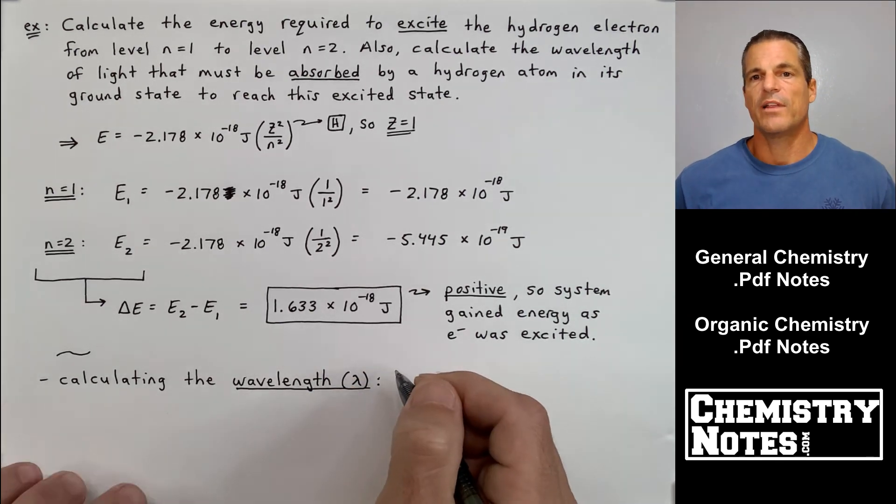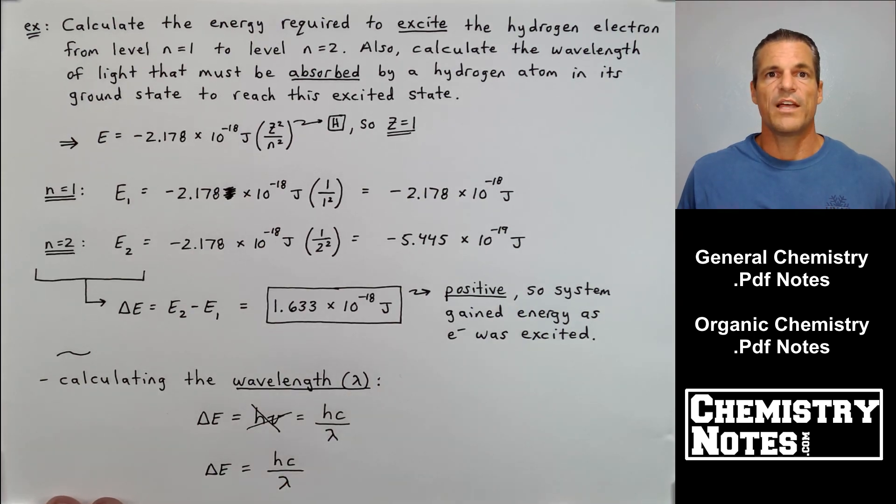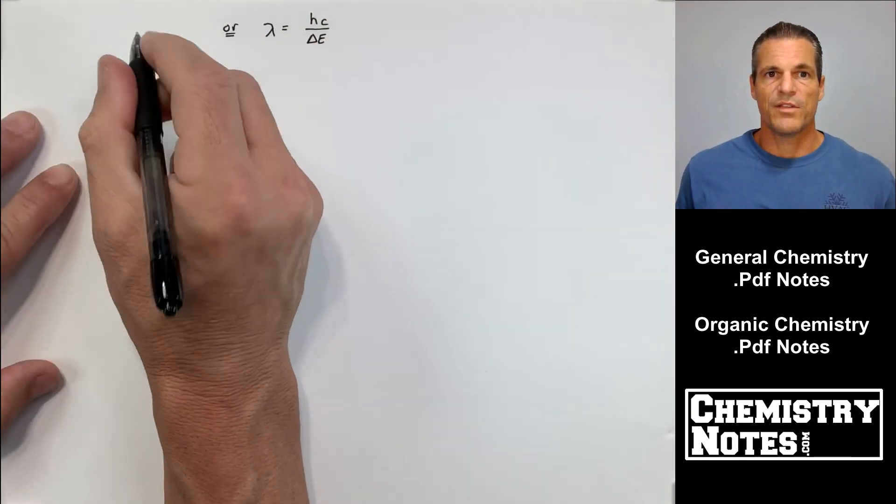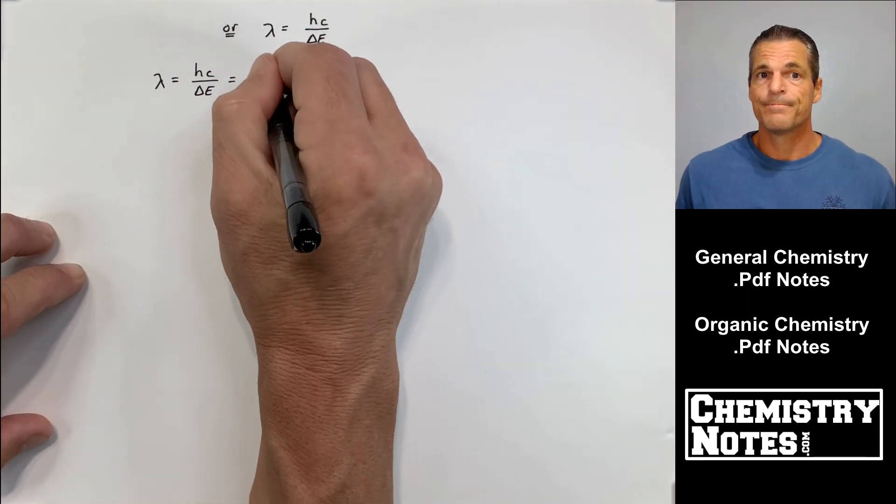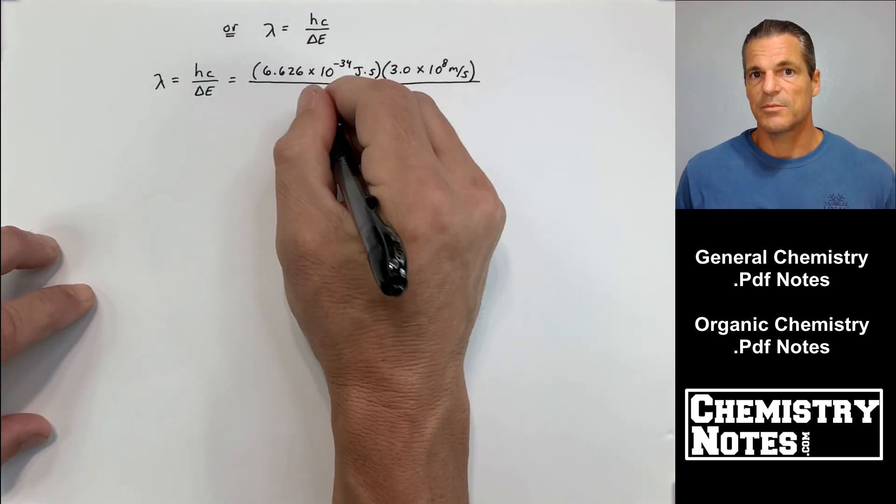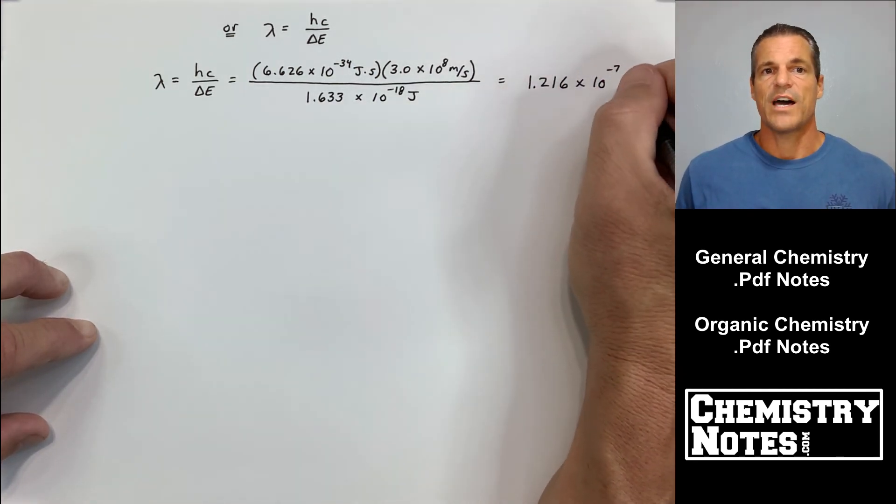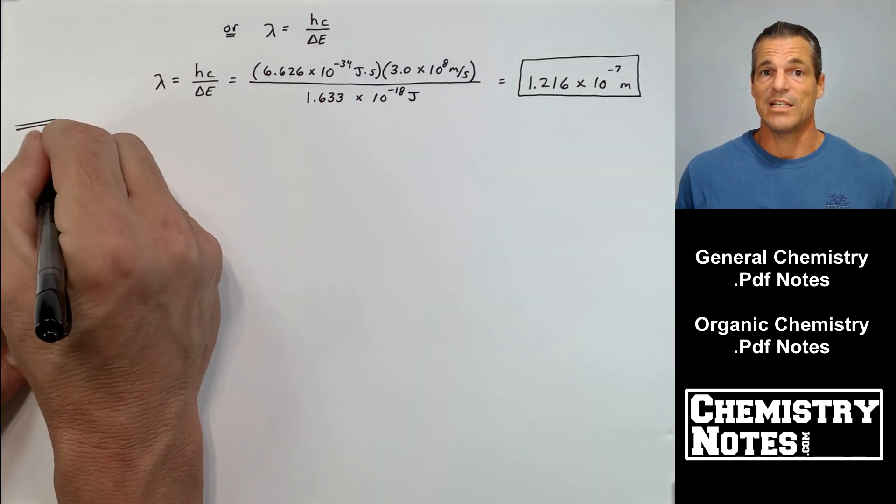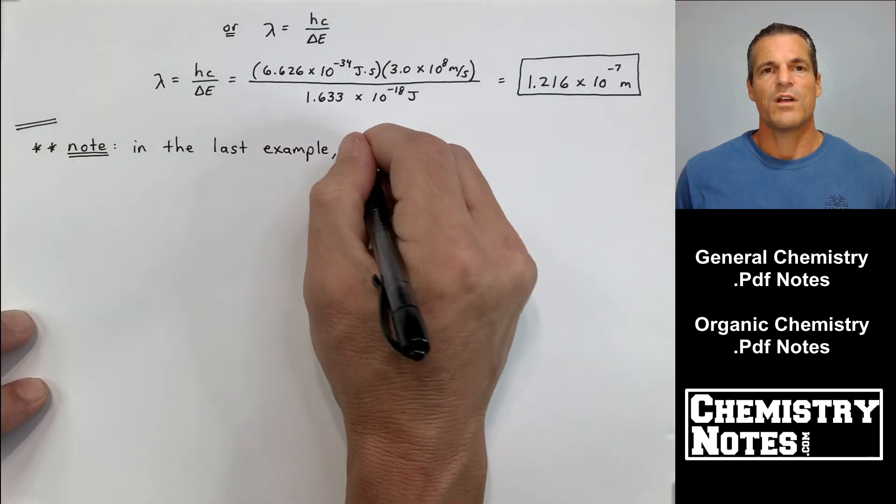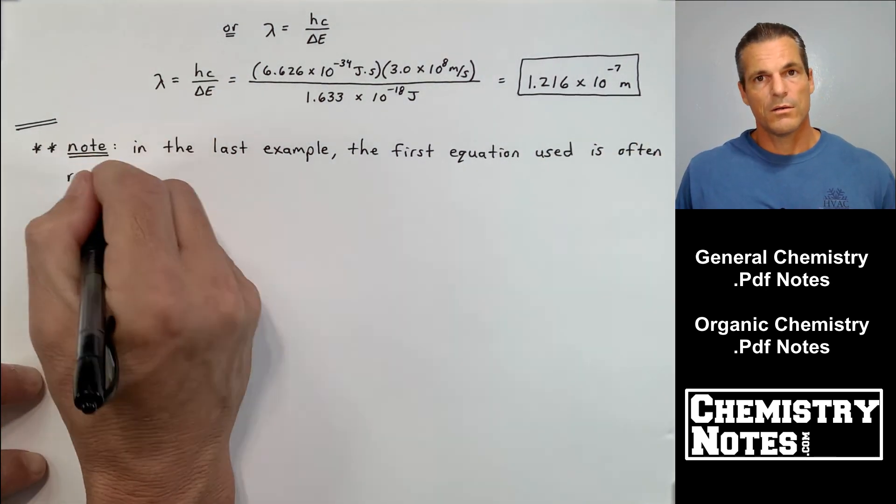To calculate the wavelength, I can just use the equation we've learned in prior videos. Delta E equals H nu equals HC over wavelength. We want to find the wavelength, so I end up with delta E equals HC over wavelength. Wavelength is equal to HC over delta E. So my wavelength equals H, which is Planck's constant, 6.626 times 10 to the minus 34th joule seconds, times C, the speed of light, 3.0 times 10 to the 8th meters per second, divided by delta E, 1.633 times 10 to the minus 18th joules. I get a wavelength of 1.216 times 10 to the minus 7th meters. If you ever find the energy, you can find frequency or wavelength.